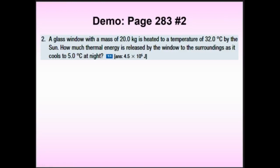A glass window with a mass of 20 kilograms is heated up by the sun during the day to a maximum of 32 degrees Celsius — say by 2–3 pm. How much thermal energy is released — meaning lost — by that same slab of glass as it cools down to 5 degrees Celsius, say at around 1 am?